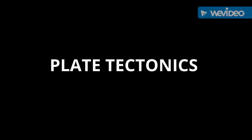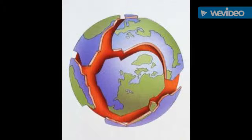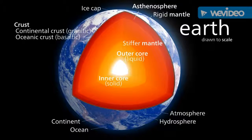Plate tectonics. Welcome to this short quick video on plate tectonics. The definition is a theory that Earth's outer shell is divided into several plates that glide over the mantle, the rocky inner layer above the core. The plates act like a hard and rigid shell compared to Earth's mantle. This strong outer layer is called the lithosphere.